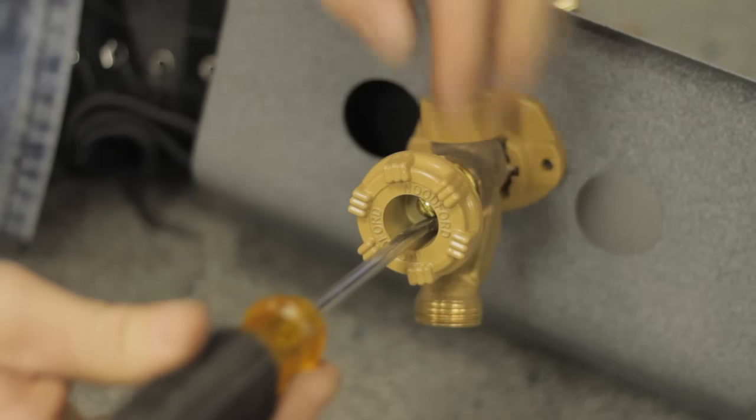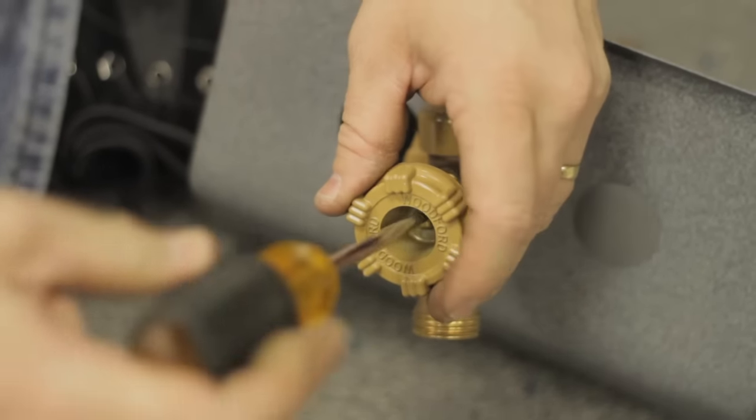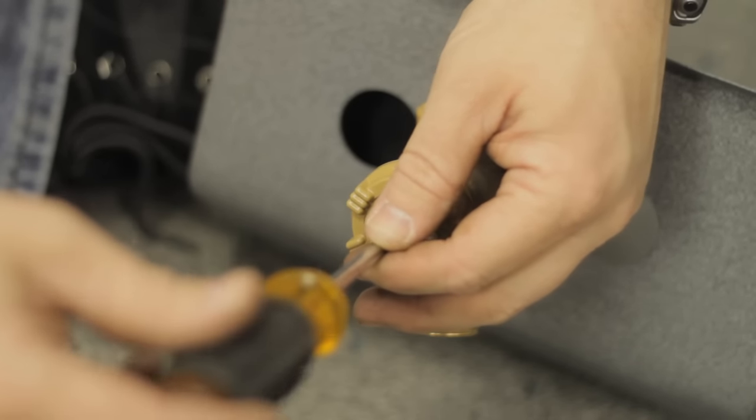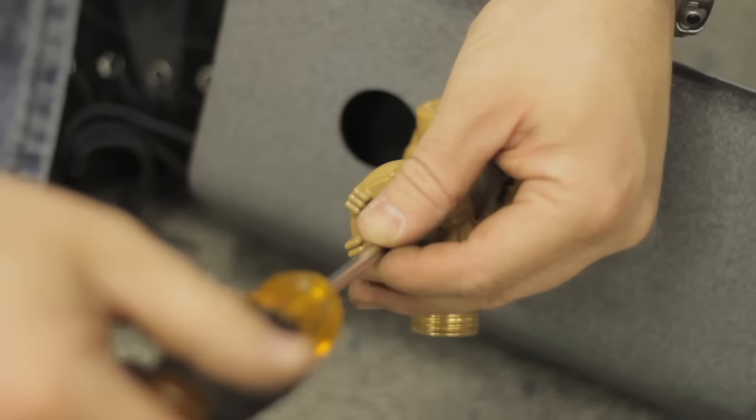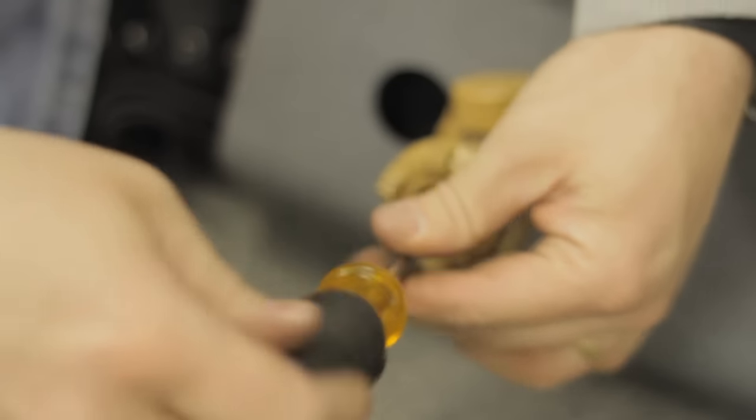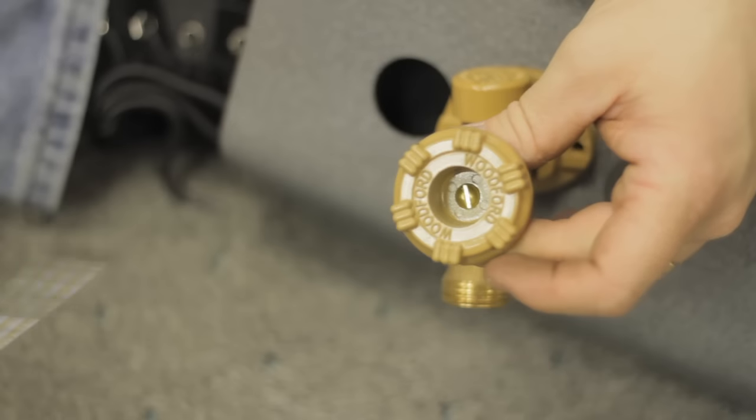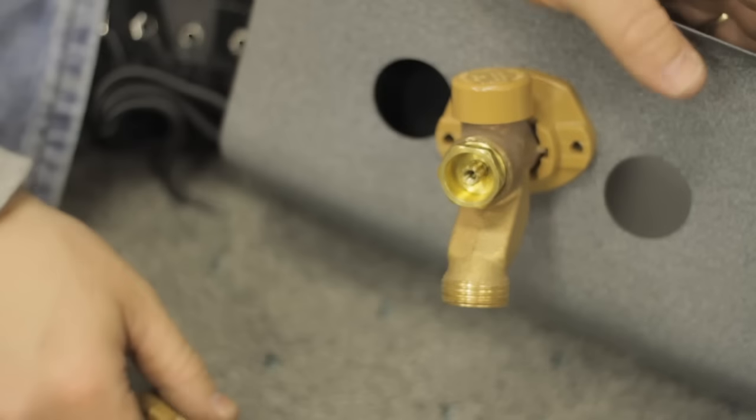First thing you want to do is remove your handle. Most all of them have the same type of screw, center screw. There are many different varieties of faucets. Remove your handle.